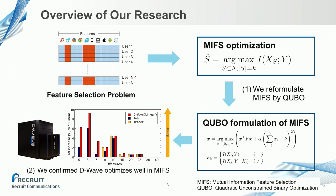Feature selection is an essential problem in machine learning. Mutual information-based feature selection, or MIFS for short, is one feature selection method which is NP-hard. Since the original formulation of MIFS is intractable, we reformulate it in QUBO formulation. We also confirm that the optimization by D-Wave performs very well in MIFS.